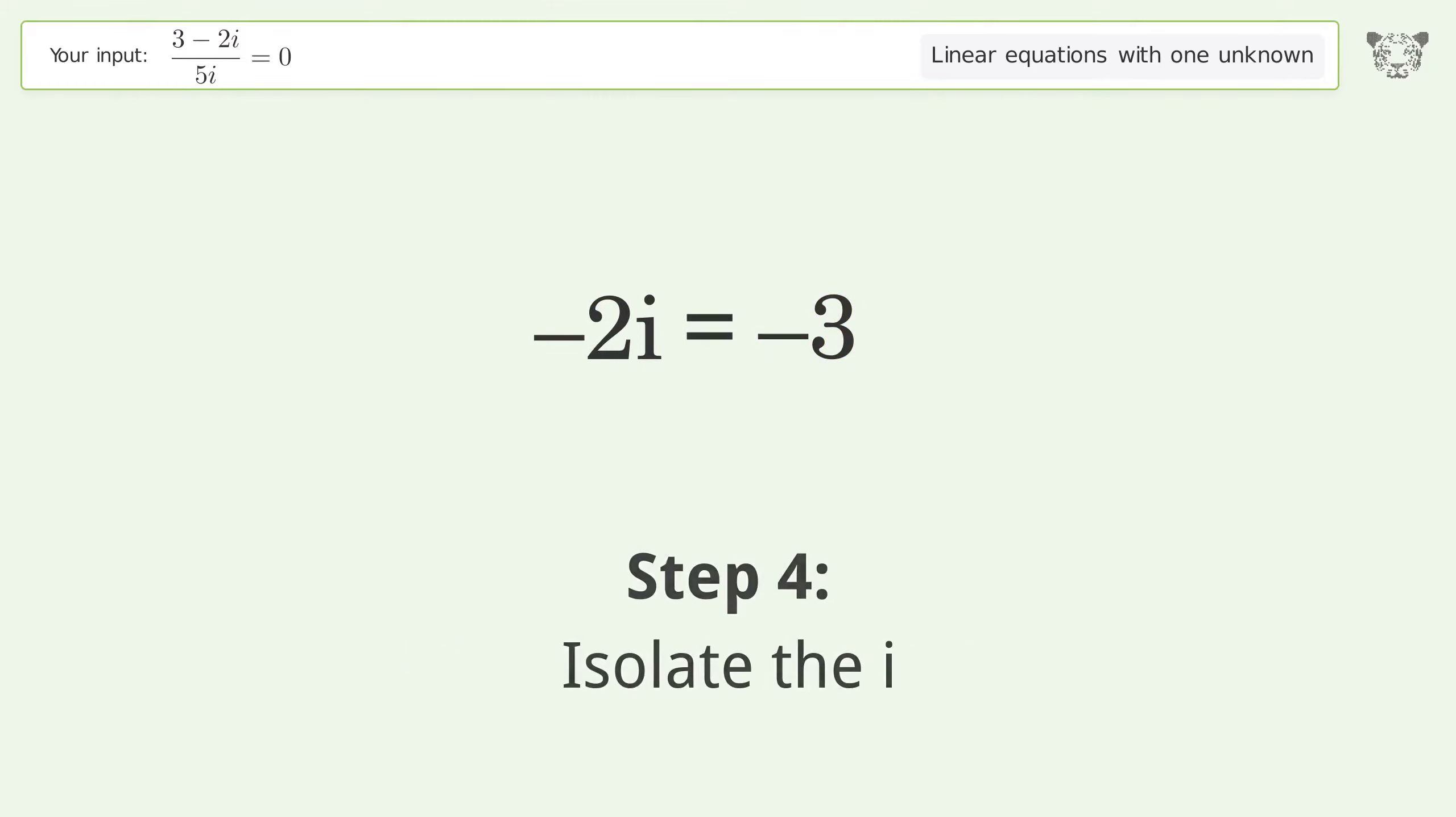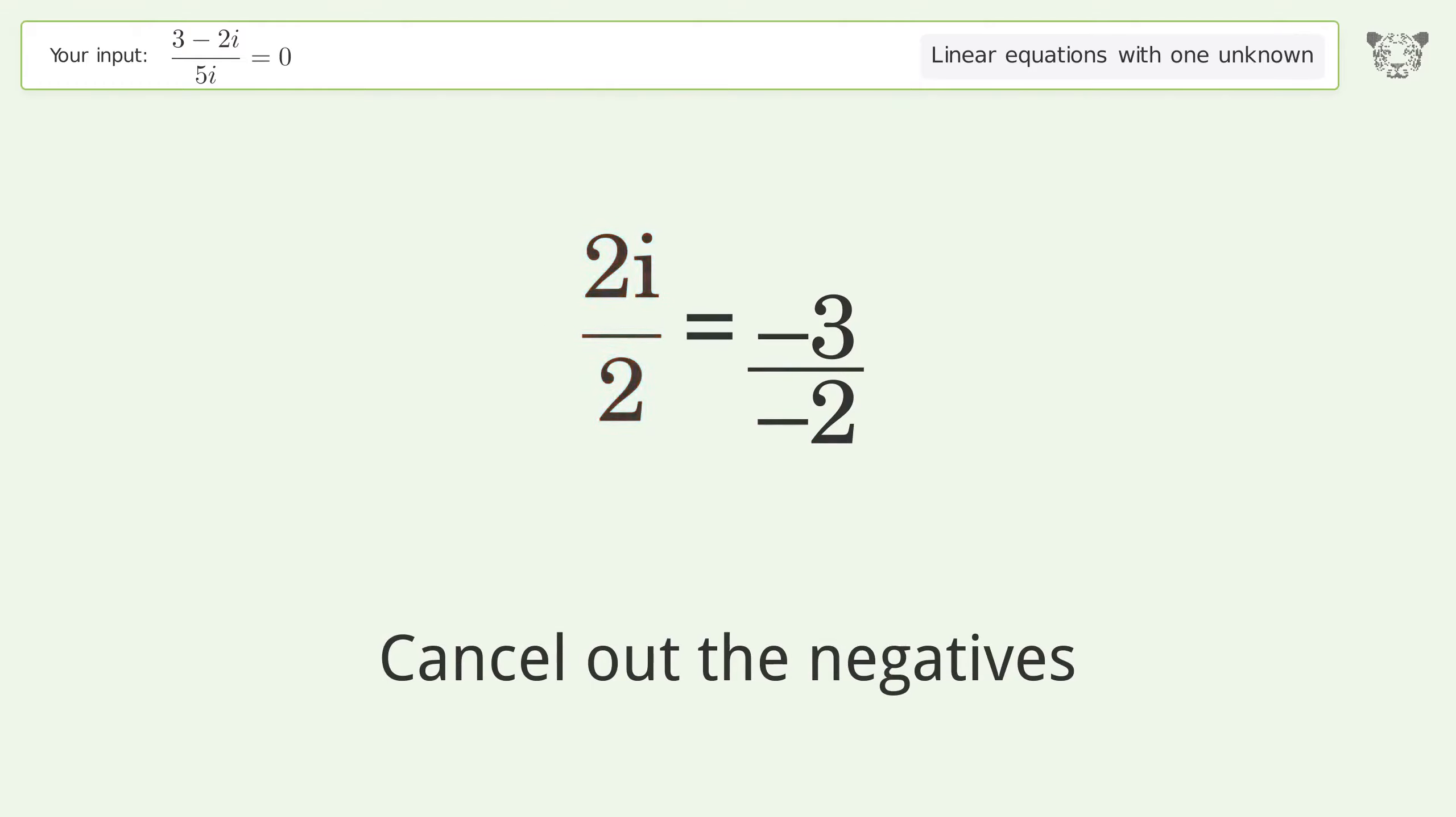Isolate the i, divide both sides by negative 2. Cancel out the negatives. Simplify the fraction.